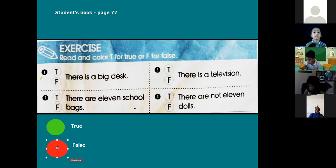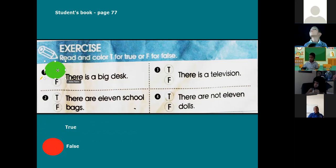Okay, listen to me. If true, you're painting with green color the T. Okay, T word. If false, you're painting with red color, right? Muy bien, sigamos pues. There is a big, there is a big desk. True or false? Voy a ir poniendo un corazoncito para que sepan donde vamos haciendo la actividad. Number two: there are eleven, eleven school bags. There are eleven school bags. Repeat: there are eleven school bags. True or false? Choose the correct answer, guys.